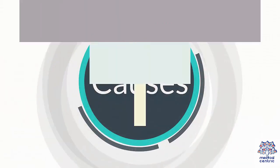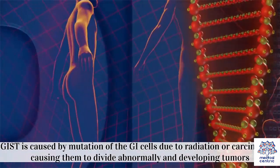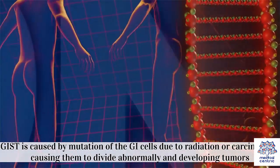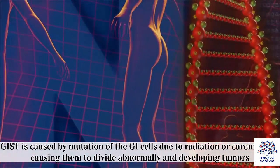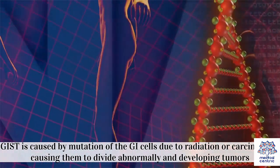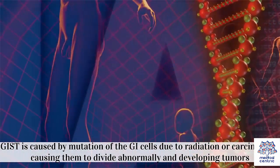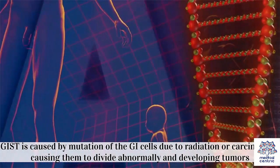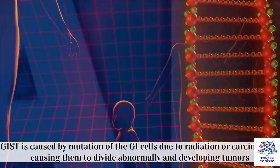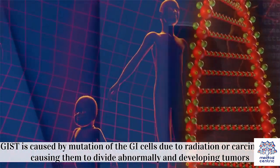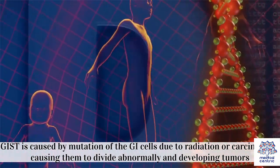Causes. GIST is caused by mutation of the GI cells due to radiation or carcinogens, causing them to divide abnormally and developing tumors.